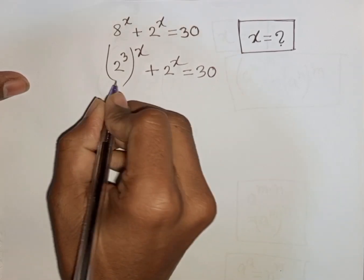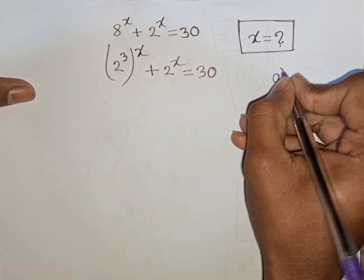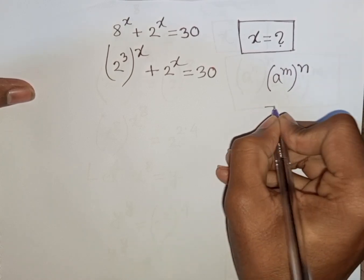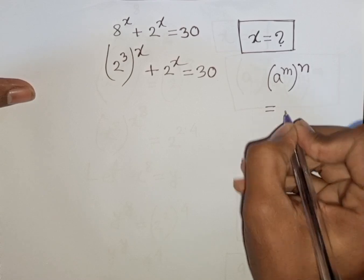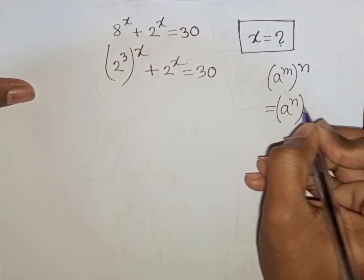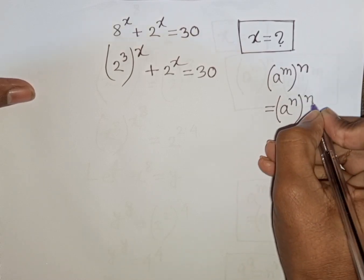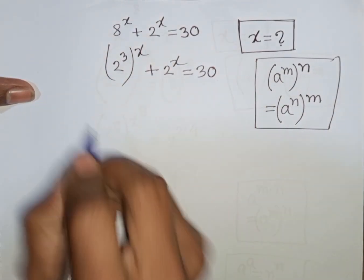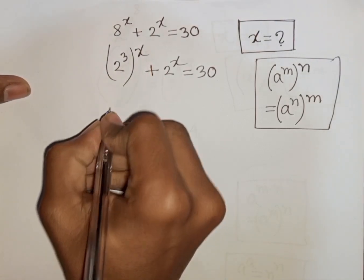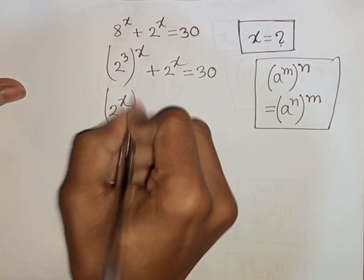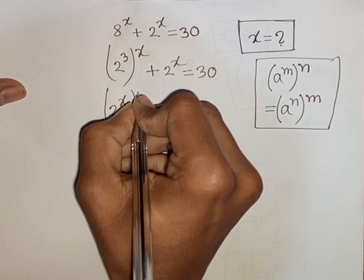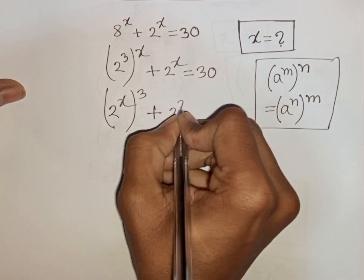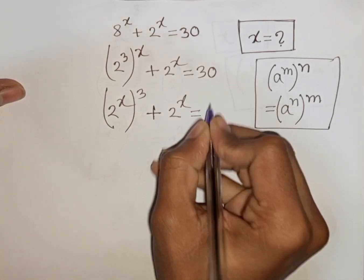Now here you can apply this exponential rule that a power m bracket power n is equal to a power n bracket power m. So according to this rule, you can write here 2 power x, then bracket power 3, plus 2 power x is equal to 30.